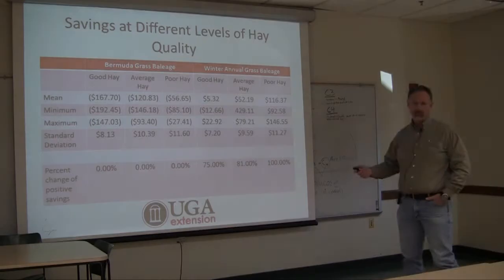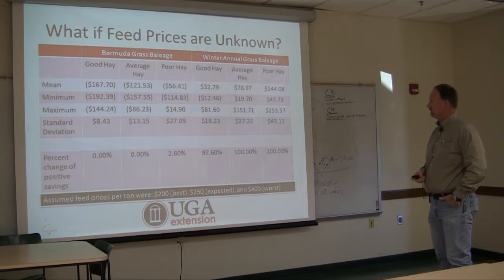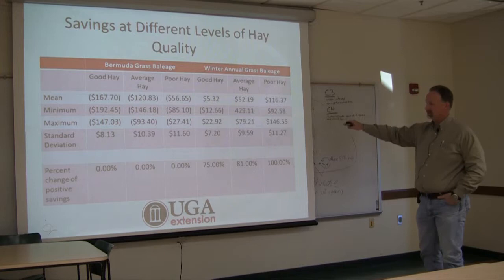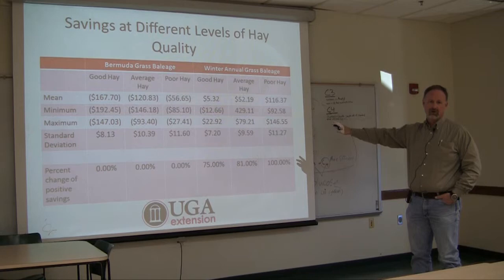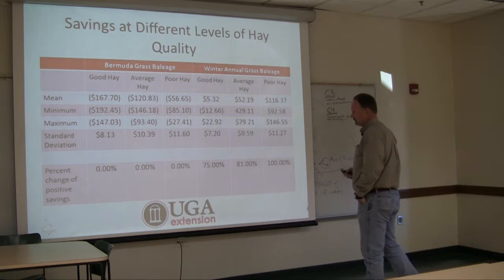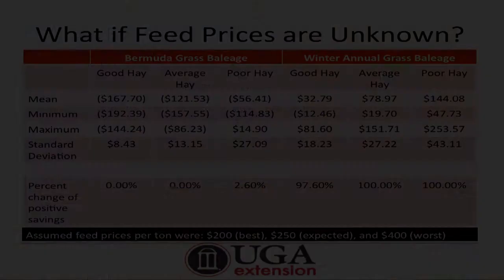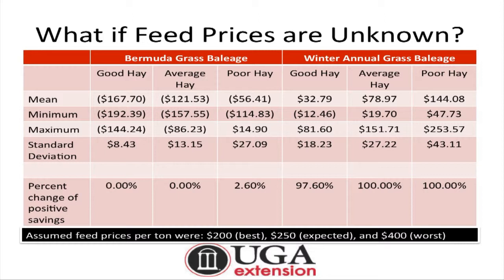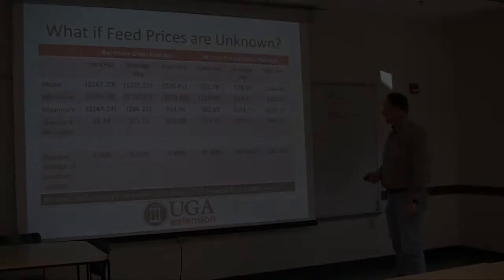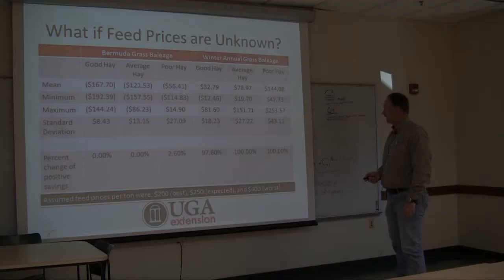One thing to note: we used prices from December–January 2013–2014, when whole cottonseed was about $250 per ton and corn gluten/soy hull mix was about $225–$250 per ton — fairly reasonable prices. Over time, feed prices have ranged from about $200 per ton in the best years to $400 per ton in the worst. In worst-case feed price scenarios, baleage almost always pays when we're talking about winter annuals.